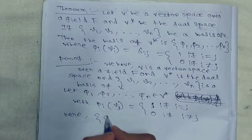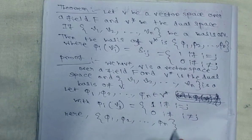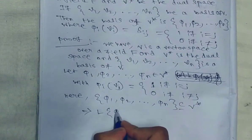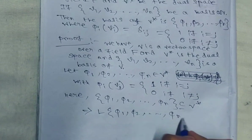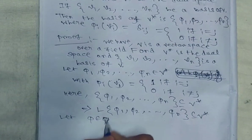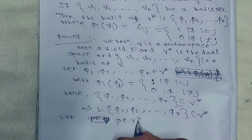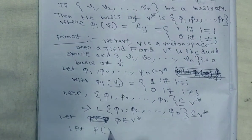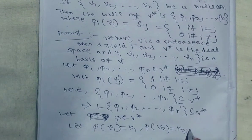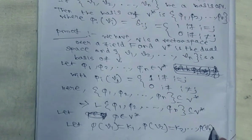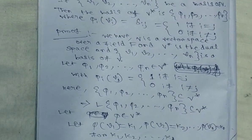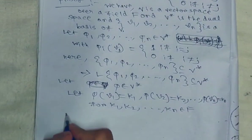Here φ1, φ2, ..., φn are contained in V*, which implies their linear combinations are also contained in V*. Now let φ belong to V*, and let φ(V1) = k1, φ(V2) = k2, ..., φ(Vn) = kn, for k1, k2, ..., kn belonging to field F.